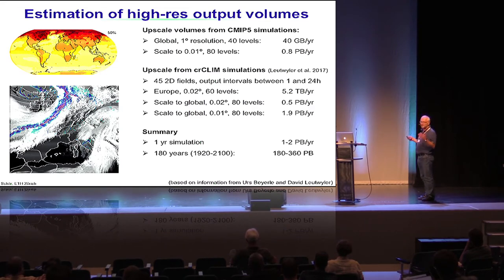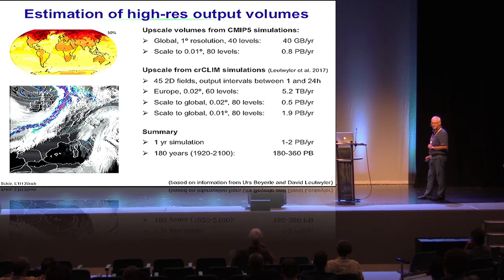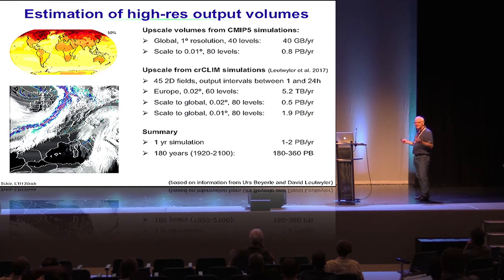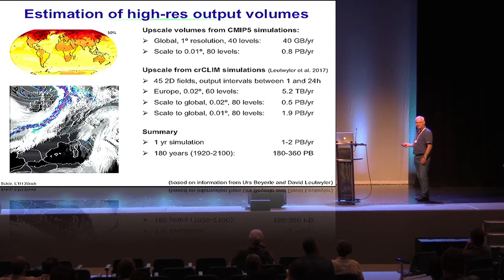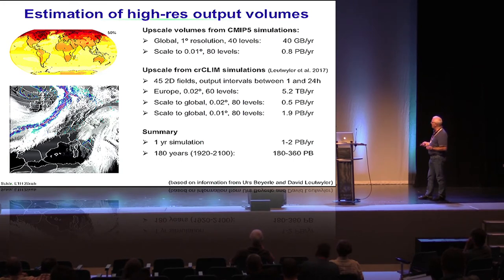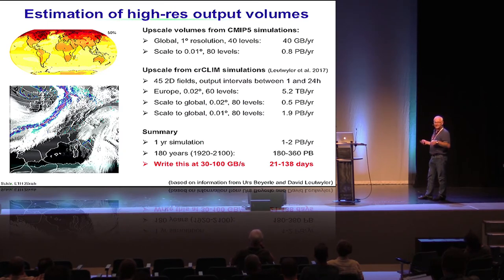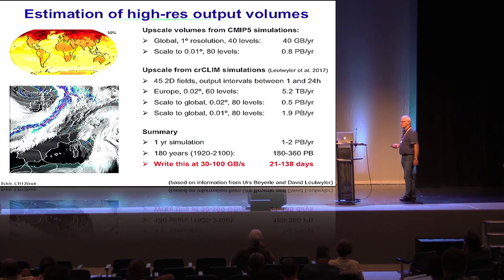If you think of 100-year IPCC simulations, this means about 180 to 360 petabytes. Those familiar with these figures will immediately say this will not happen - this is the size of the entire ECMWF archive, written over 30 to 40 years, and here we request it for one individual simulation. The I/O bandwidth is also a critical bottleneck: writing at 30 to 100 gigabytes per second would require 20 to 140 days. Even just analyzing this load of data becomes impractical at global scale.